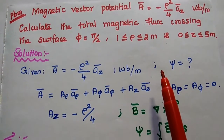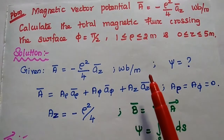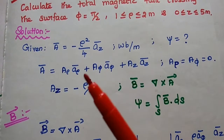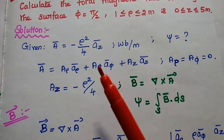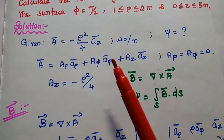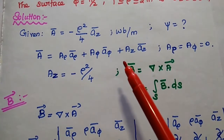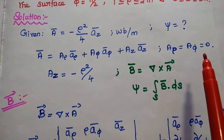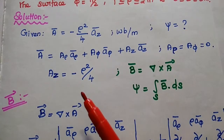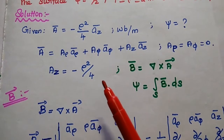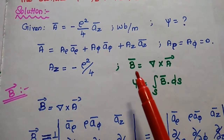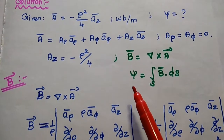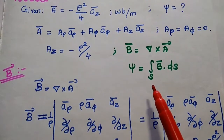We are going to find out the total magnetic flux crossing the given surface. In the solution part, first we write the given data. The vector magnetic potential A vector equals minus ρ² by 4 âz. Only the az component is given, so here a_ρ and a_φ values are 0, and az equals minus ρ² by 4. From this magnetic vector potential, we can find the magnetic flux density B vector, and from B we can find the total magnetic flux crossing the given surface area.